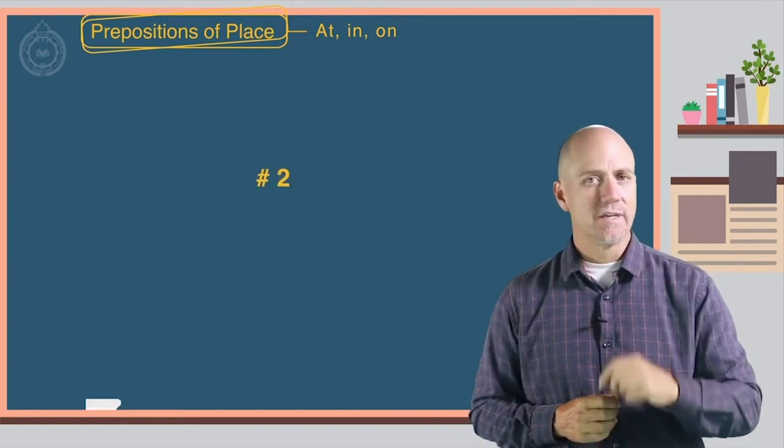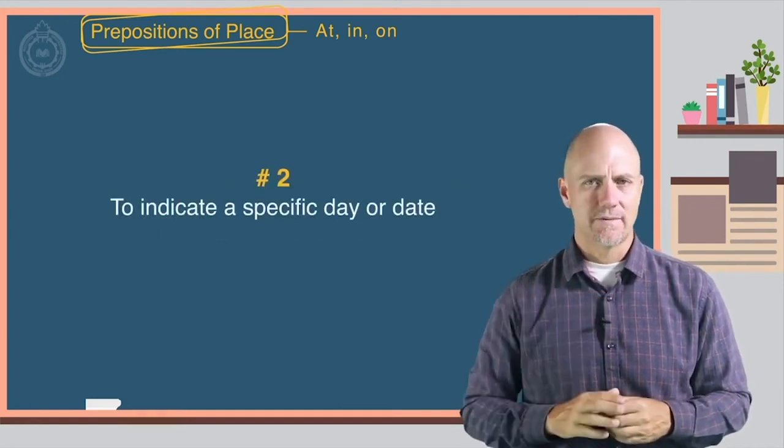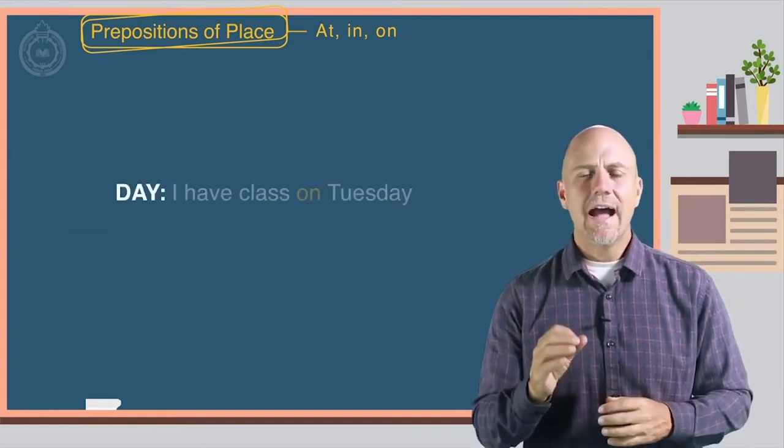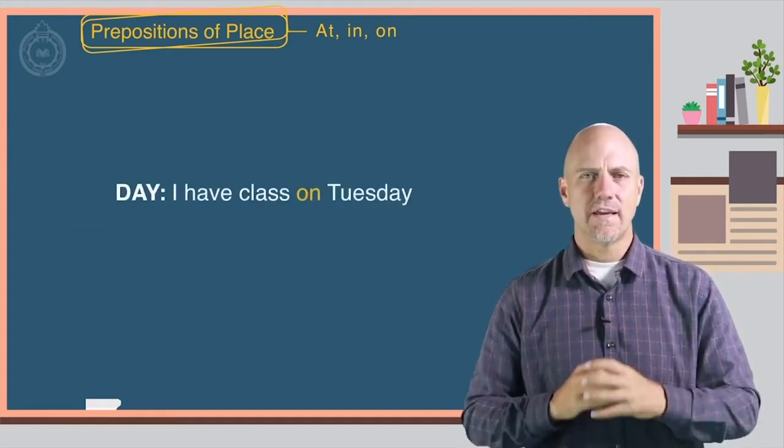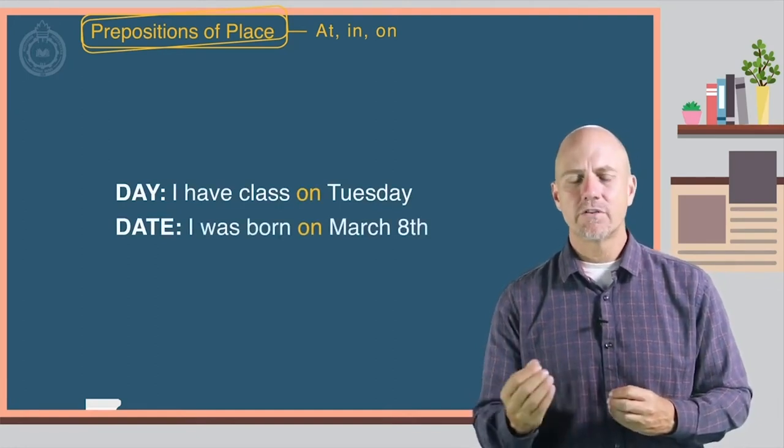Number two: to indicate a specific day or date. Here are some examples. A day: I have class on Tuesday. Or a date: I was born on March 8th.